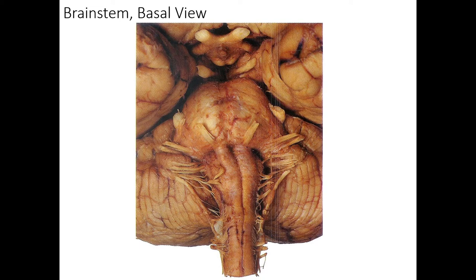At first, up top, cranial nerve one is the olfactory bulb. What we see here is actually the olfactory tract and stria coming from the olfactory cortex — the piriform cortex. That's the root of cranial nerve one. Next, we see cranial nerve two, the optic nerve. We can see that on either side and we can see how it's forming the optic chiasm with the optic tract behind it posteriorly.